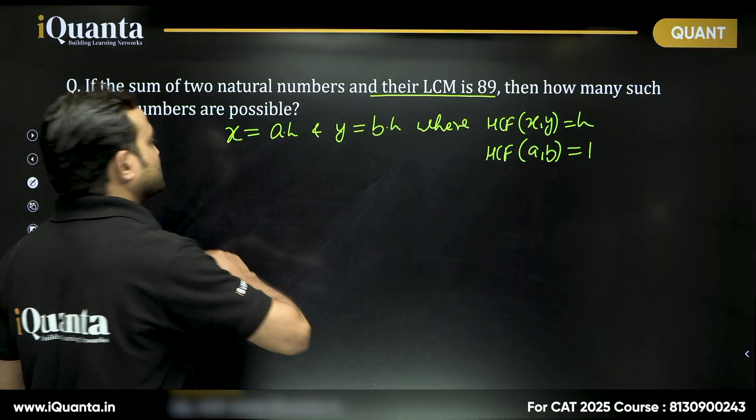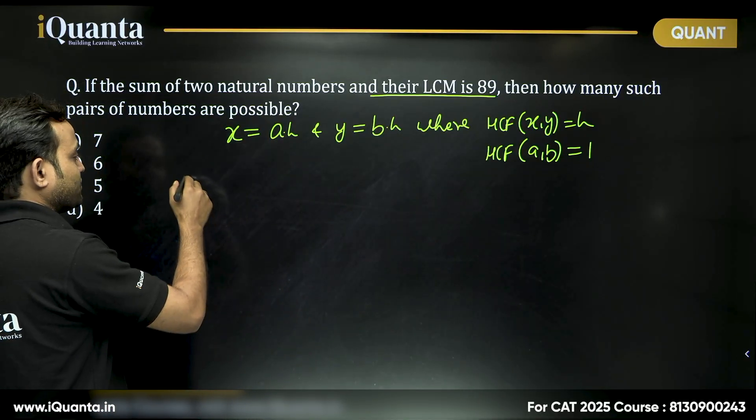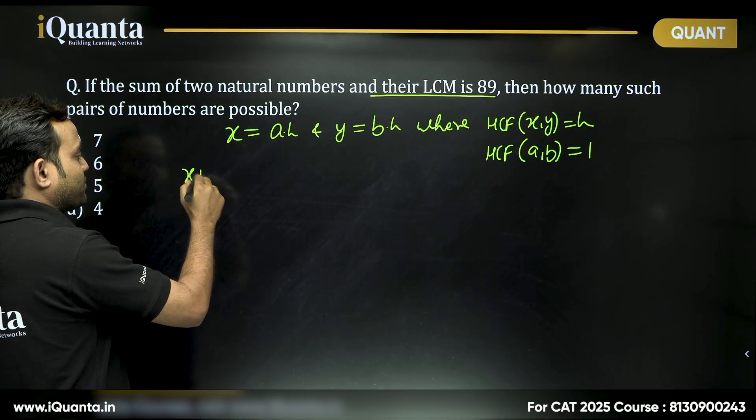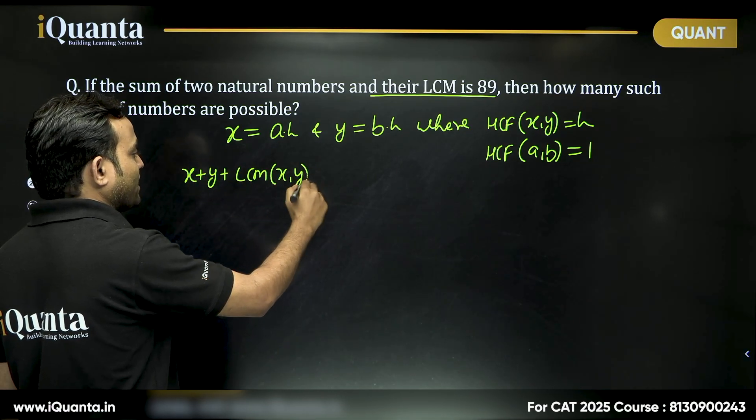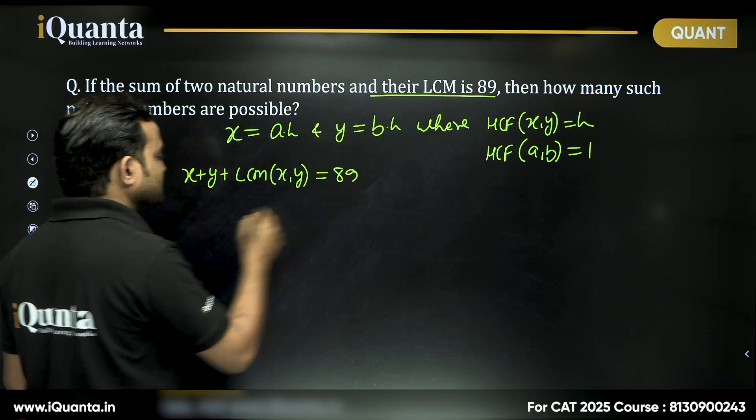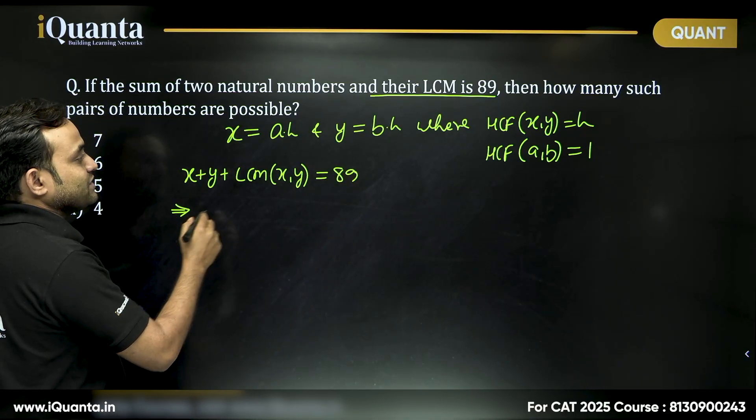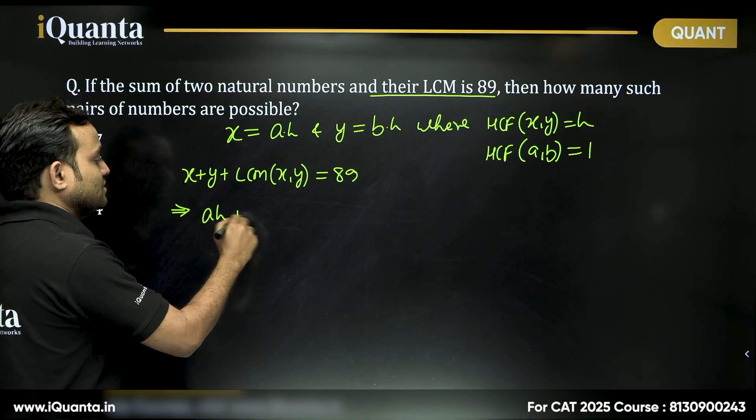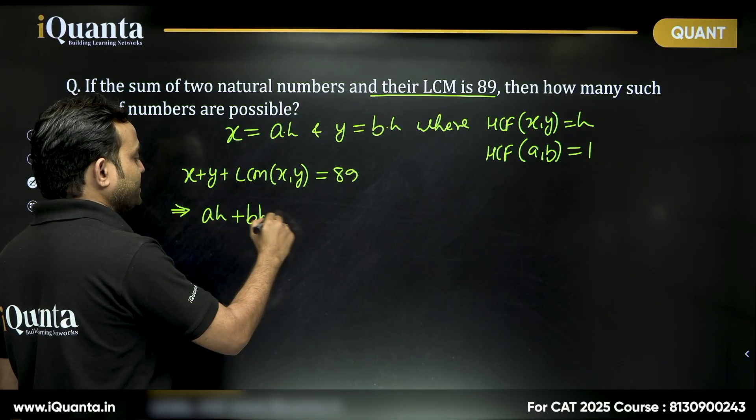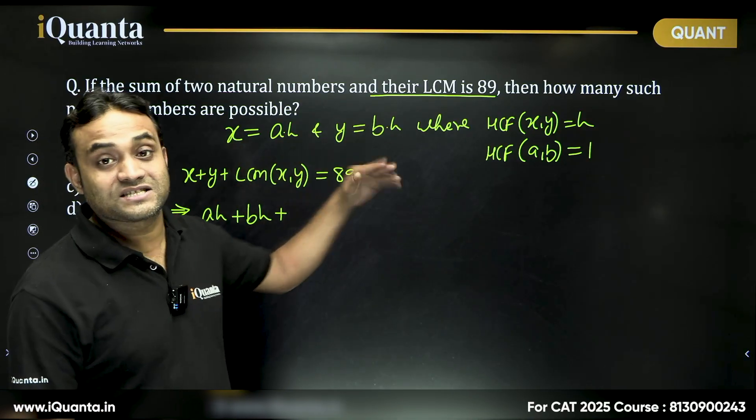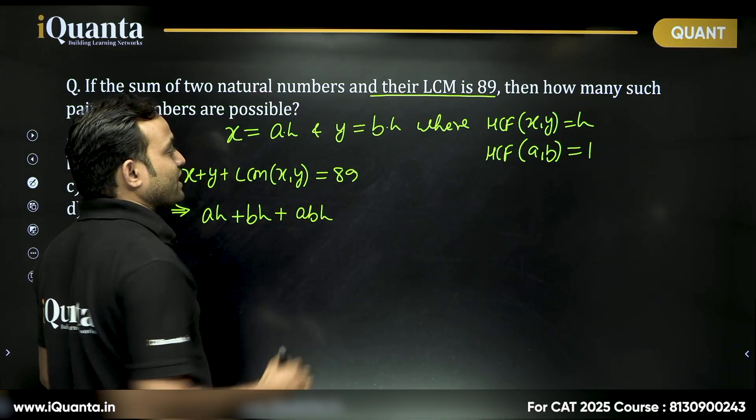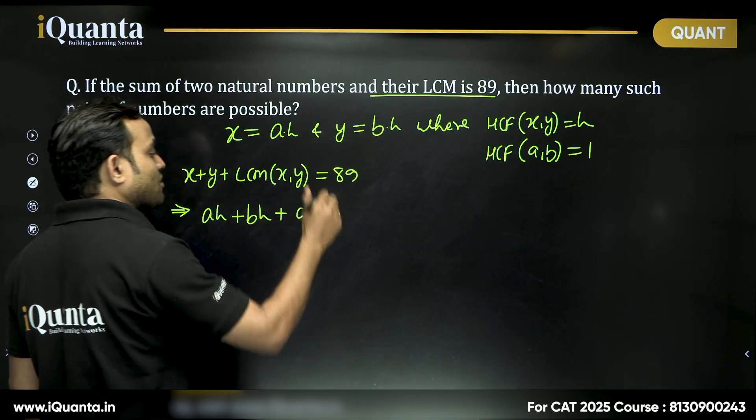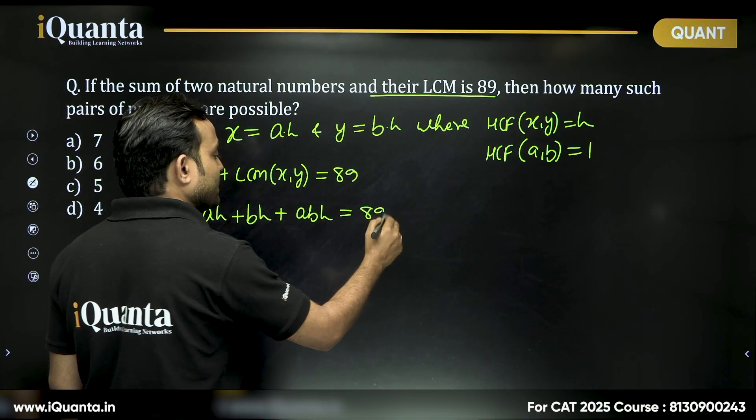Now, let's follow the question. It says sum of two natural numbers, meaning X plus Y plus LCM of X and Y is equal to 89. Now, can I say X can be written as AH, Y can be written as BH, and LCM of X and Y can be written as ABH? Because A and B are coprime to each other, H is the common factor. This equals 89.